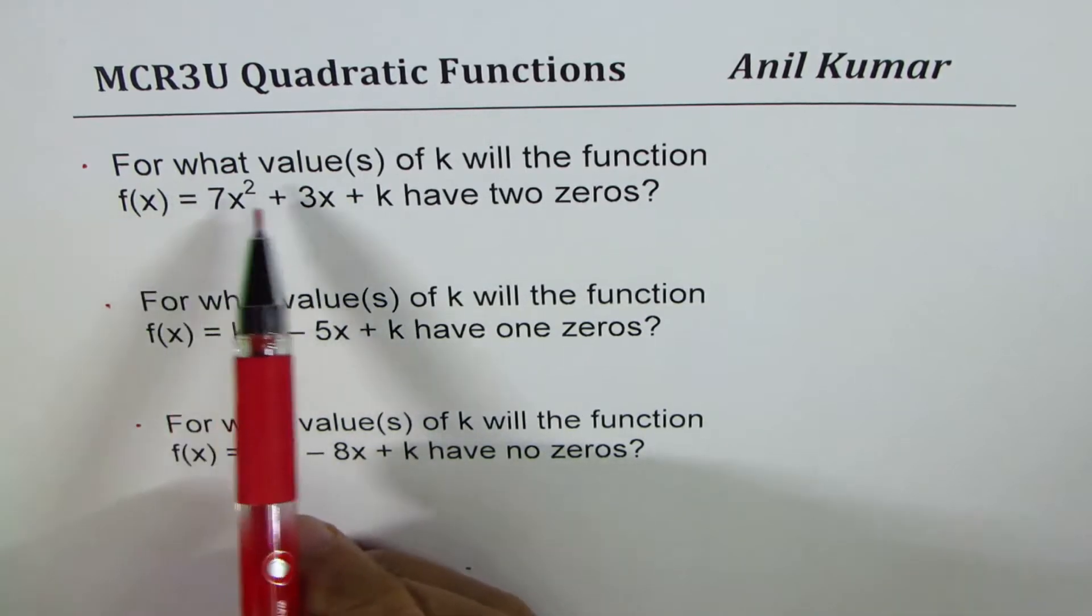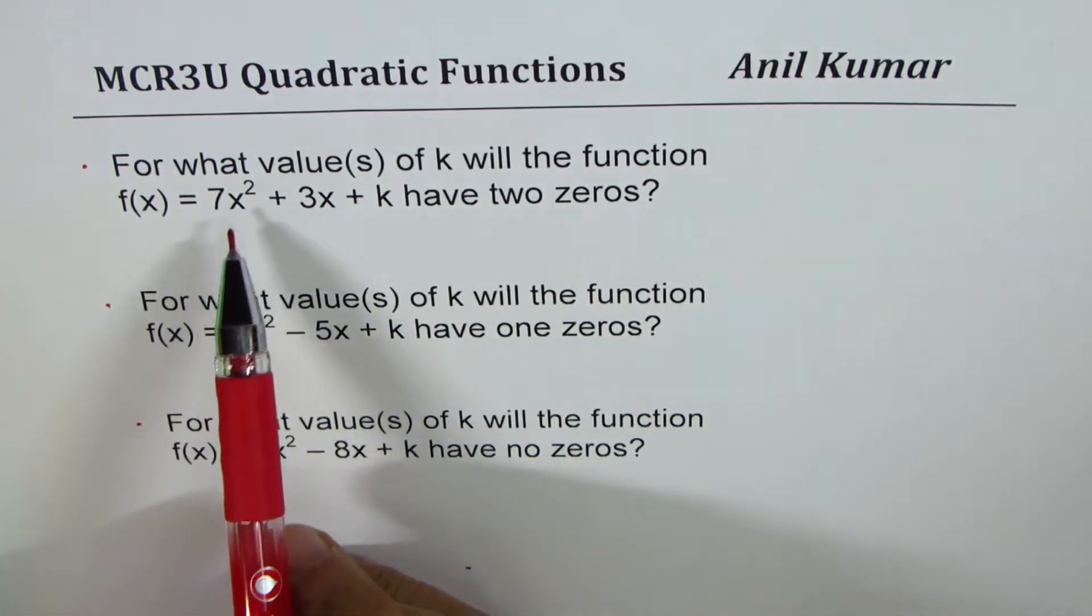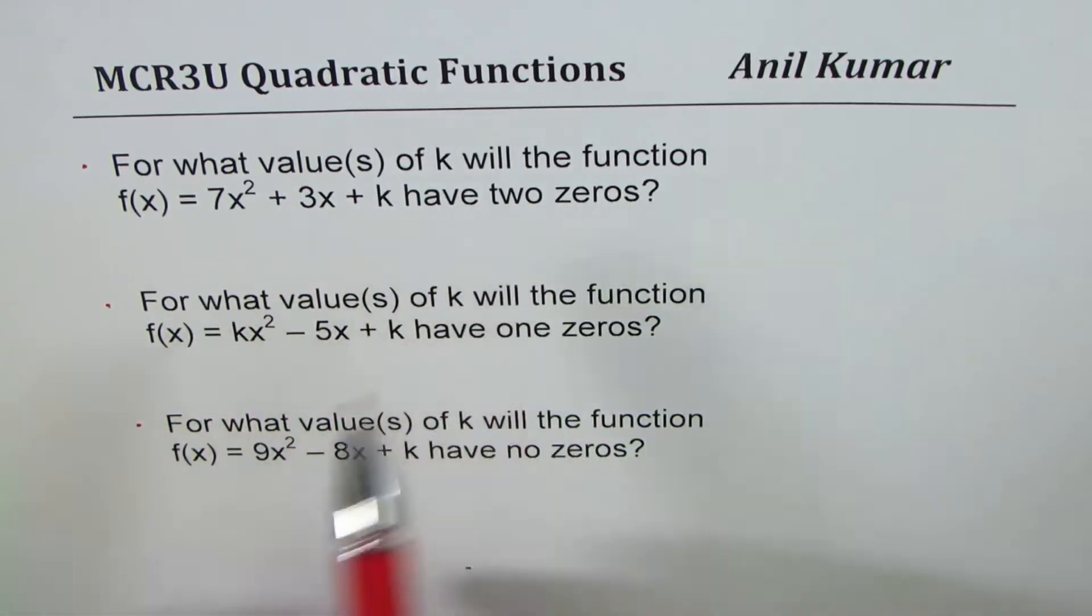The questions are: for what values of k will the function f(x) = 7x² + 3x + k have two zeros?